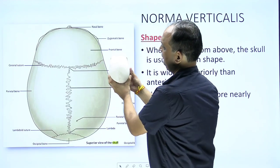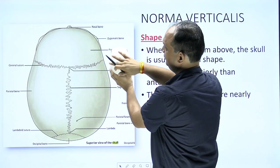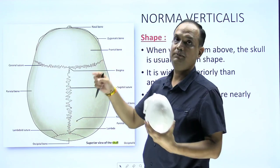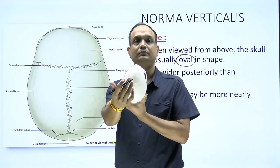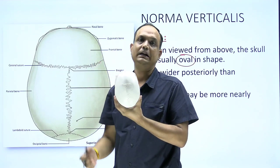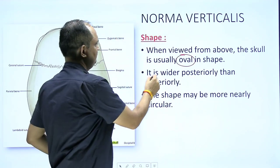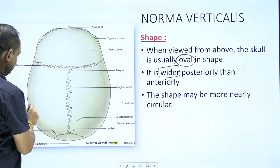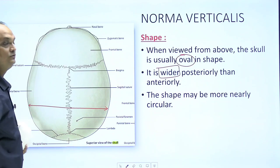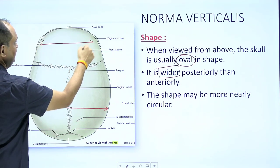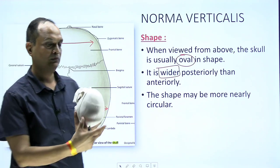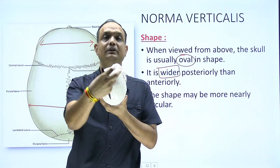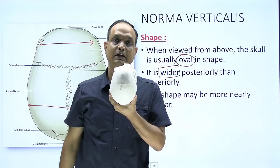If you see the skull from above, this is the outline which is appreciated, showing the oval shape of the skull — that is known as norma verticalis. Now apart from that, it is important that it is wider posteriorly. You can see that the posterior diameter is more as compared to the anterior diameter. That means the skull has more width on the posterior side as compared to the anterior when seen in norma verticalis.